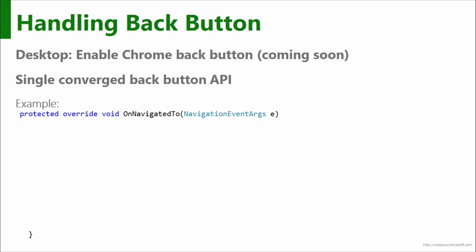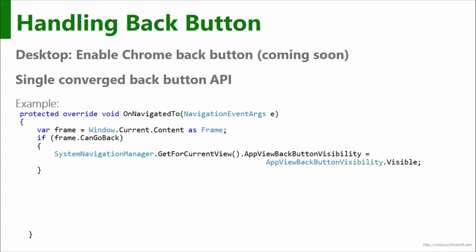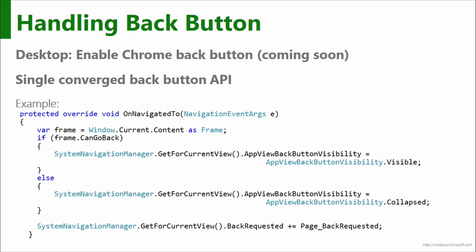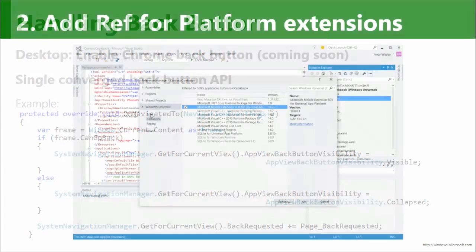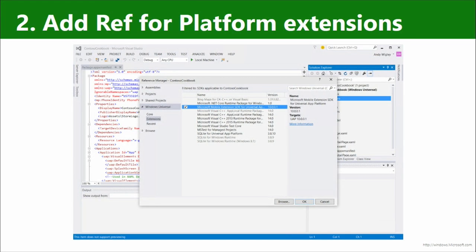The back button handling is covered in much more detail in the navigation framework session of this MVA. There is a single converged back button API in the UWP API set — you use System Navigation Manager and check or set the visibility of the app view back button in the Chrome, setting it to visible or collapsed, with Back Requested hanging off System Navigation Manager. You may also need to add references to platform extension SDKs — the majority of code you'll need, around 85-86%, will be in the universal API set.